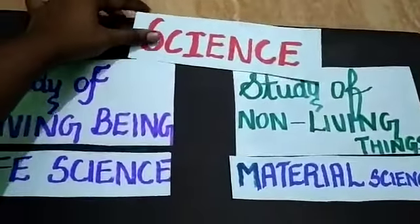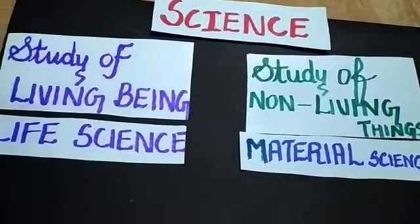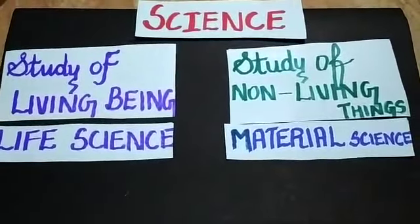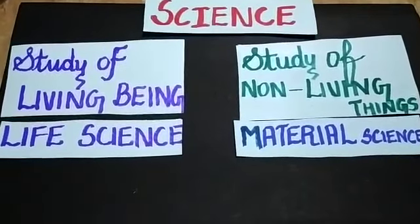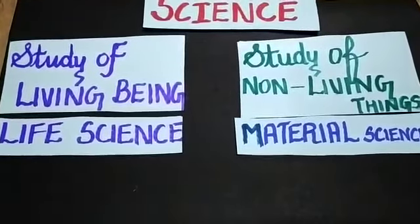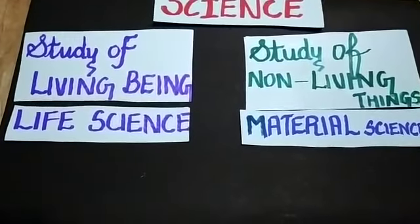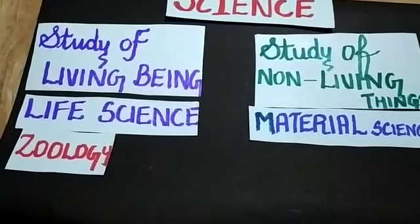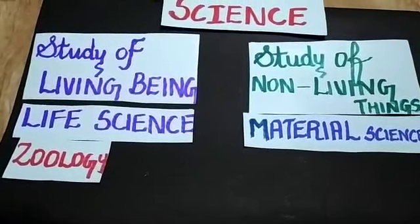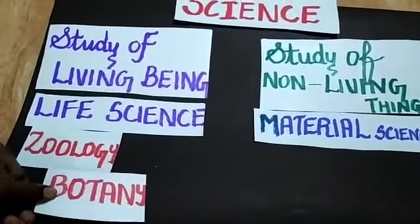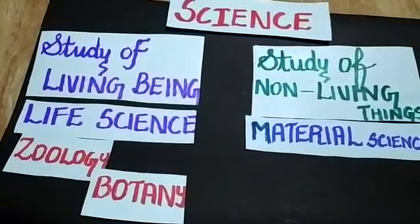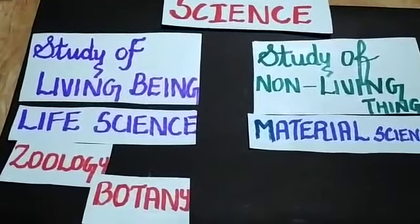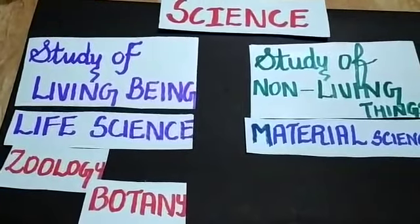So we have seen two groups in science: life science and material science. Life science is further divided into two subjects. The first one is zoology — the study of animal life, including all animals and human beings. The second is botany — the study of plant life. Together, botany and zoology are called biology.